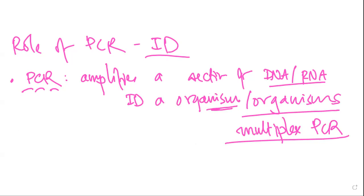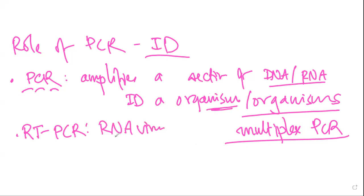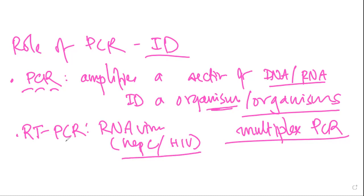There is also a special subtype called RT-PCR, or reverse transcriptase PCR. This is done for RNA viruses such as Hepatitis C virus and HIV. For RNA viruses, the RNA is first converted by reverse transcriptase, and then PCR is performed — that is RT-PCR.